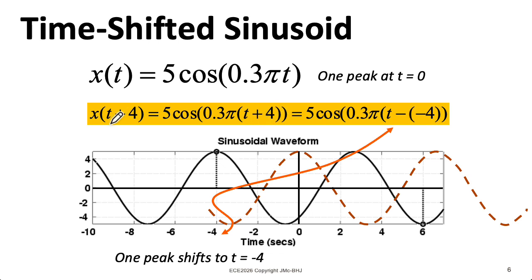So if you see t plus a number in an argument, it's like moving the function to the left. If you see minus a number, it's like moving it to the right.